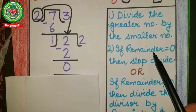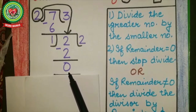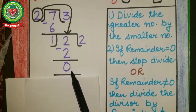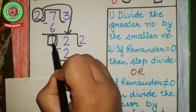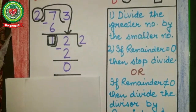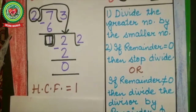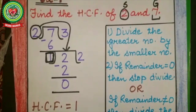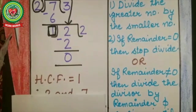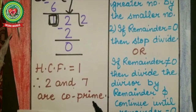Step number 2 says: if the remainder equals 0, then stop dividing. The remainder is now 0, so we stop. The divisor of this last division is the HCF. So HCF equals 1. One more thing — two numbers are called co-prime if their HCF equals 1. Here HCF is 1, so 2 and 7 are co-prime numbers.